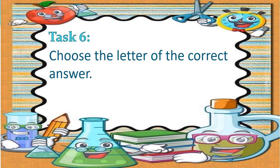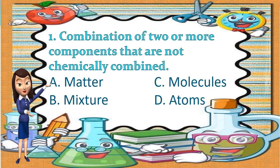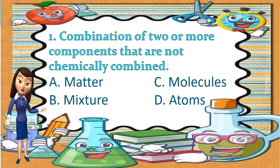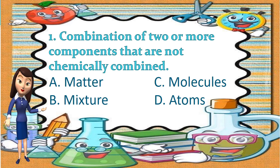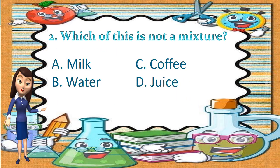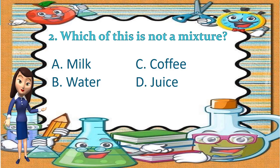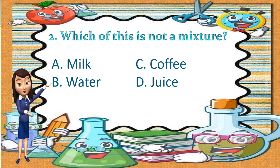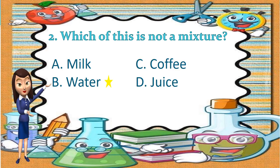I'm pretty sure you have learned a lot today. Get your pen and paper and try answering our test. Are you ready? Choose the letter of the correct answer. Number 1: Combination of two or more components that are not chemically combined. A. Matter, B. Mixture, C. Molecules, D. Atoms. The answer is letter B — Mixture. Number 2: Which of these is not a mixture? A. Milk, B. Water, C. Coffee, D. Juice. The correct answer is letter B — Water. Water is chemically combined; water is not a mixture, it is a compound.